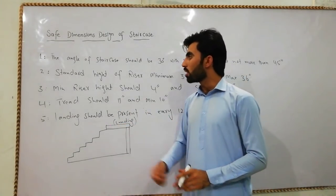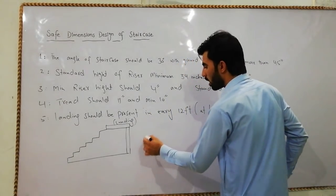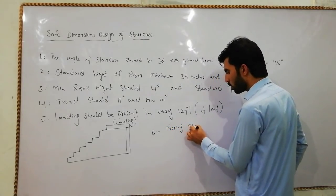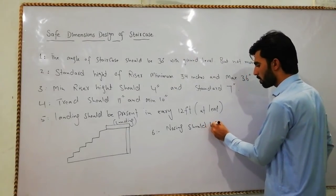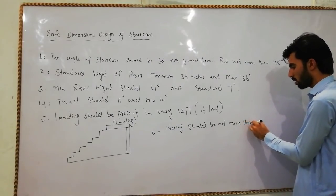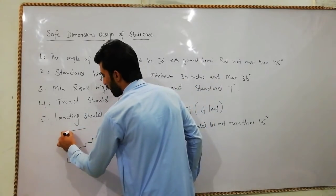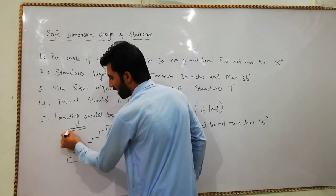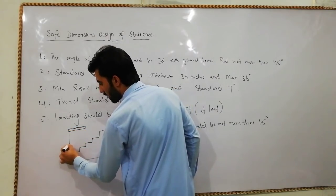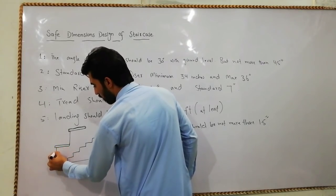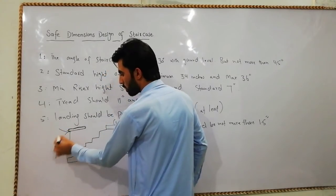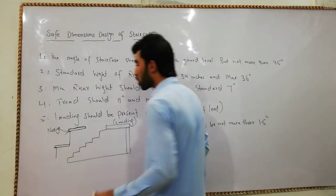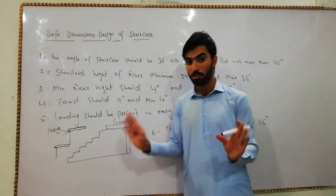The sixth point is nosing. Nosing should not be more than 1.5 inches. The nosing is the extra length that projects beyond the riser — for example, when marble or tile is placed on the tread, there is sometimes extra material extending forward. That extra space is called nosing, and it should not exceed 1.5 inches. These are all very important safe dimension design points for staircase.